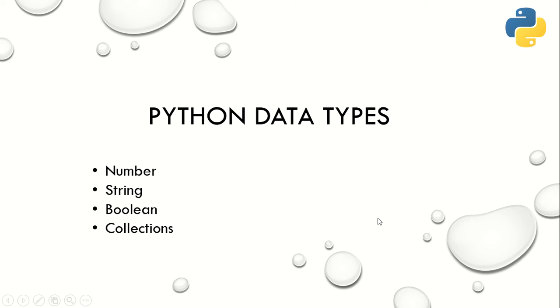So basically there are three data types that we normally use: number, string, and boolean.